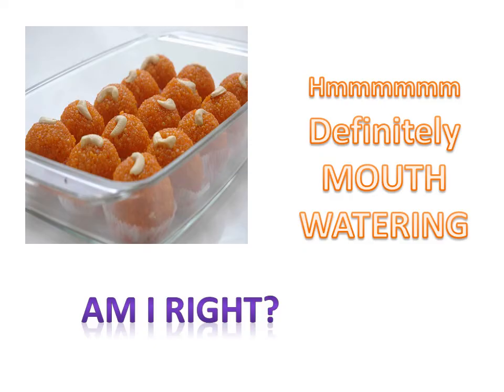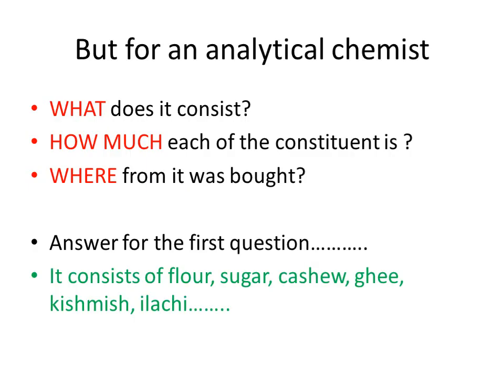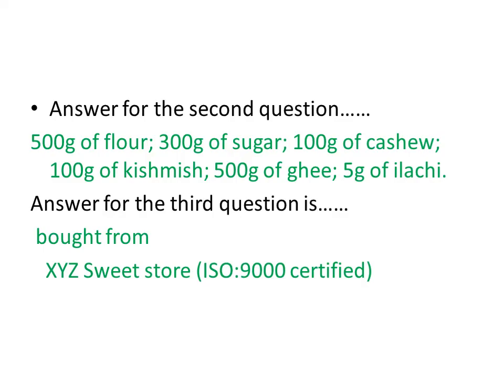For an analytical chemist, three questions come to mind when observing a food item. First: what does it consist of? — it consists of basin (flour), sugar, cashew, ghee, kishmish, lychee, etc. Second: how much of each constituent? — 500 grams of flour, 300 grams of sugar, 100 grams of cashew, 100 grams of kishmish, 500 grams of ghee, 5 grams of elaichi. Third: from where was it bought? — XYZ sweet store, ISO 9000 certified, meaning a branded source.